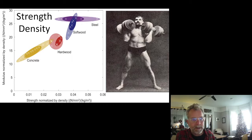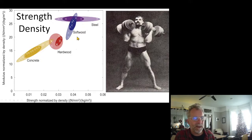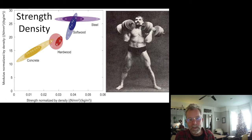Interestingly, hardwood is worse than softwood on this strength density chart. That doesn't make sense, right? Well, hardwood is a lot heavier than softwood, so the strength density is lower even if the absolute strength is higher — just like concrete. Wood is an extraordinarily strong material.